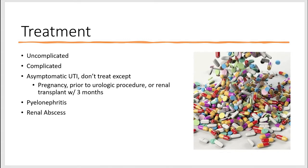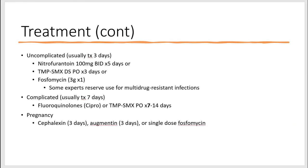In terms of treatment for UTI, we treat based on type: uncomplicated, complicated, pyelonephritis, or renal abscess. In patients with asymptomatic UTI, we don't treat them, except if they're pregnant, going for a urological procedure, or have a renal transplant within three months. For uncomplicated UTI, treatment is usually three days — nitrofurantoin 100mg twice a day for five days, or Bactrim for three days, or fosfomycin three grams one time, though some experts reserve fosfomycin for multidrug-resistant infections. For complicated UTI, treatment is usually seven days with either Cipro or Bactrim. If patients are pregnant, they're treated with cephalexin for three days, augmentin for three days, or single-dose fosfomycin.